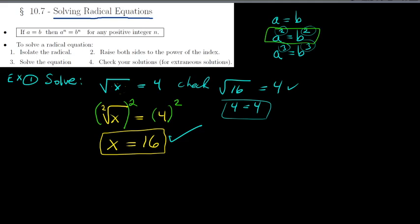Once you get rid of the square root, you might have some algebra to do, but that's usually not the hard part. The fourth step is to check your answer — this is very important, because in some problems the answer you get might not actually work. You're checking for extraneous solutions, like we did back in chapter 7.